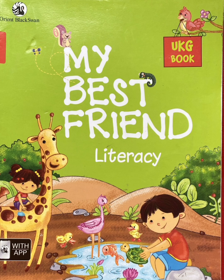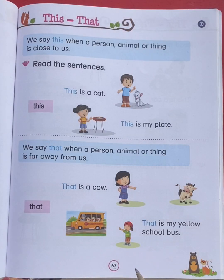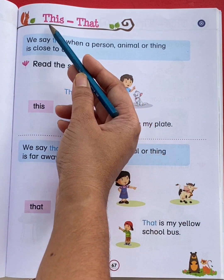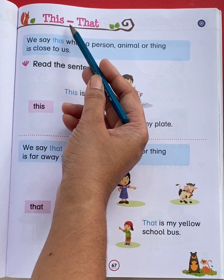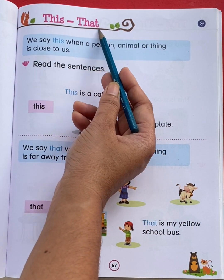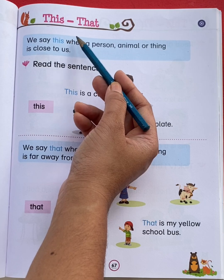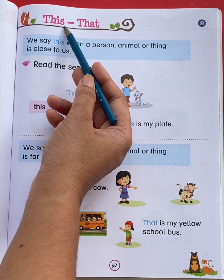Hello students, take out your My Best Friend Literacy book and come to page number 67. The topic is 'this' and 'that'. First, we will learn about 'this'.